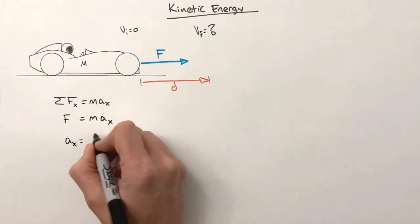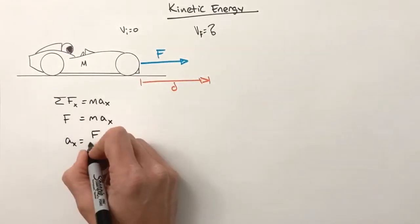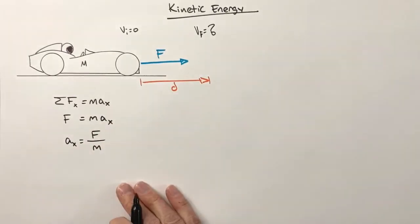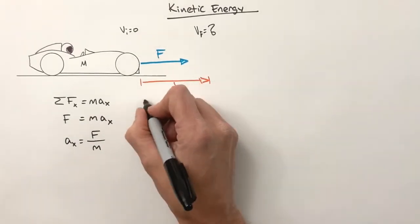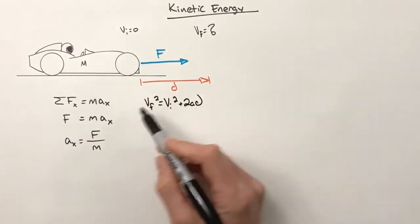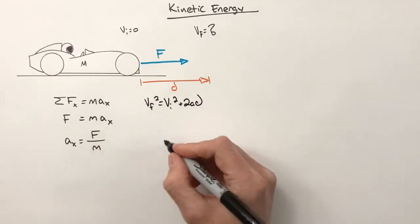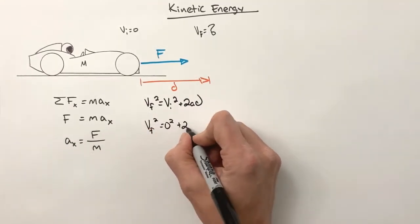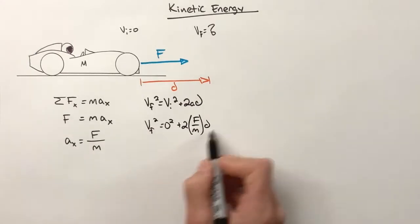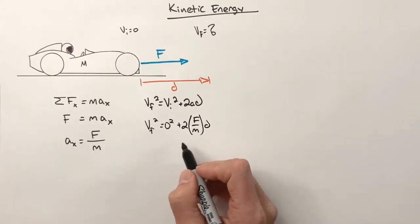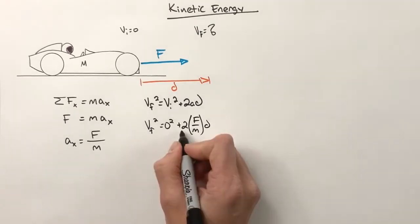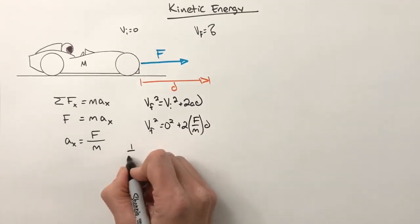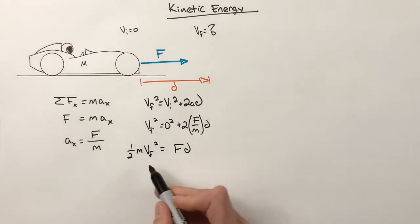Now applying this to the kinematic equations, we're going to come up with an expression for the final velocity. And I'm going to take and rearrange this a little bit in kind of a strange way. You'll see why in just a second. Pulling the two and the m over, we wind up with this equation right here: one half m v_f squared equals F d.